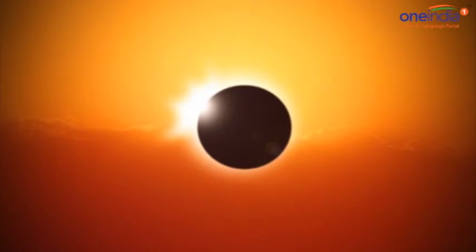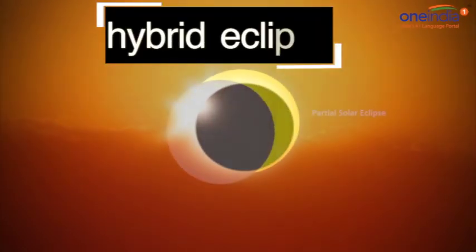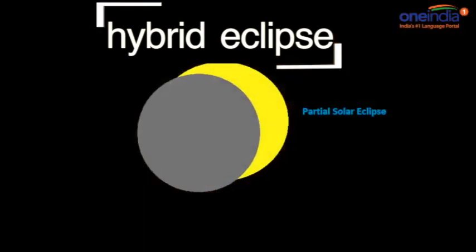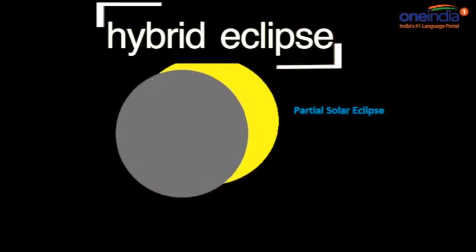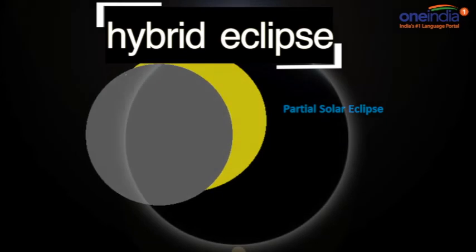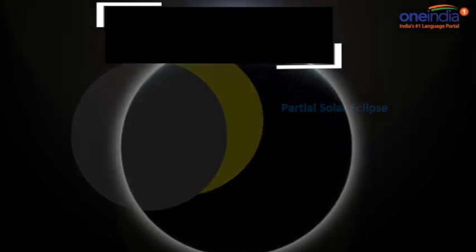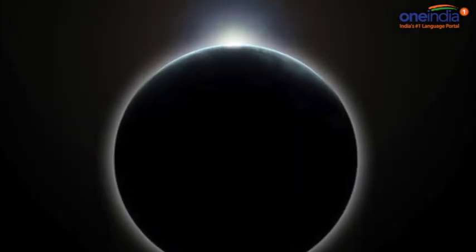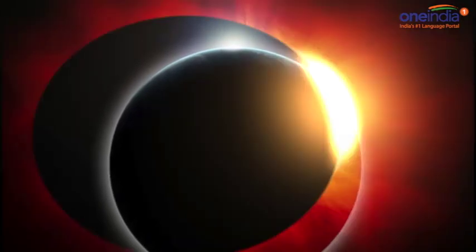There is another type of solar eclipse known as a hybrid eclipse, which shifts between a total and annular eclipse depending on where you view it from the earth. These are comparatively rare though. From either the north or the south pole, only a partial solar eclipse is able to be viewed.